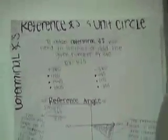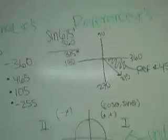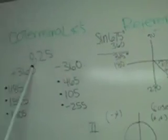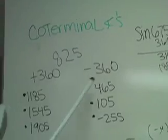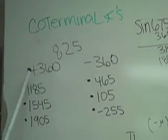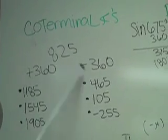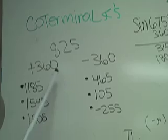Here's coterminal angles, reference angles, and the unit circle. To find the coterminal angles, you are given a number, and to find the coterminal angles, you'll either subtract 360 or add 360.